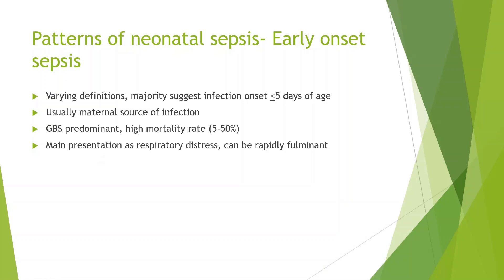The screening protocols and maternal prophylaxis are all targeting group B streptococcus in the majority of cases. In premature babies, you may have ESBL E. coli and other organisms as well causing fulminant infection.